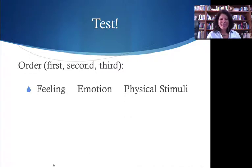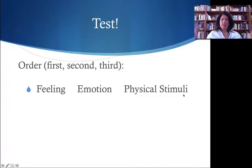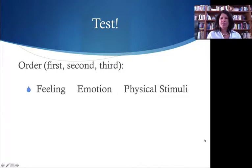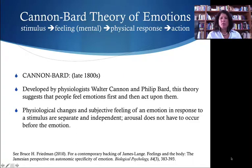Hopefully you all got this right. You have a physical stimulus, you perceive your world, you receive a stimuli. That triggers an emotion which causes you to have this feeling. So this is a modern neuroscientific view of these things, but where did all this come from?